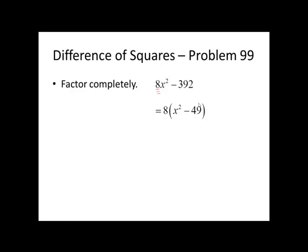49 is on my list as a perfect square. 49 is 7². Obviously, x² is a square, so I have a difference of squares. To factor a difference of squares, remember that it's going to be the first plus the second times the first minus the second. The common factor of 8 stays in front the whole way through the problem, so I'm left with 8 times (x + 7) times (x - 7).